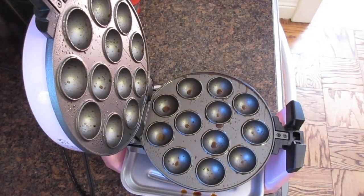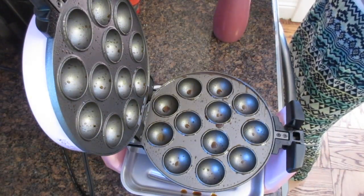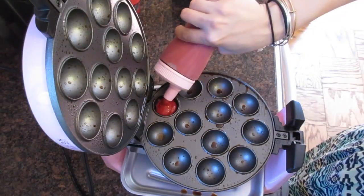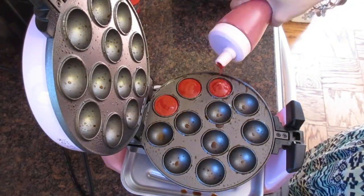Since I had the cake pop maker, all I did was preheat it and put some cooking spray on it. Next, I'm going to fill each hole with the cake mix.